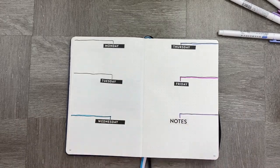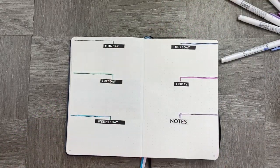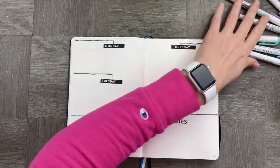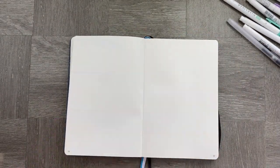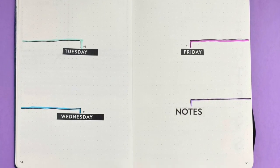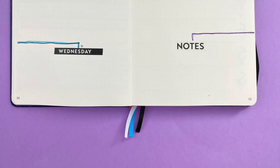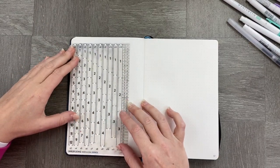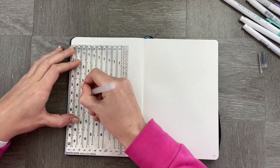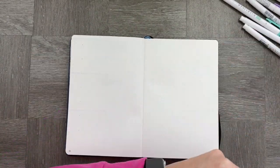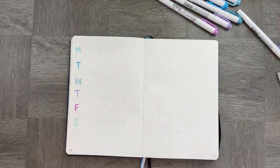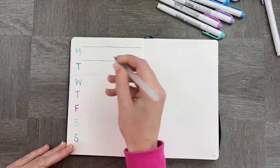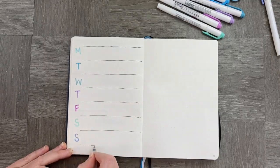All right, and down to my very last spread of the month. This time I'm going to use my highlighters as the guide for what I want to do, and I'm going to put in Monday through to Sunday and then kind of draw a border around them.